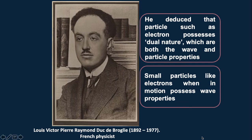This is de Broglie. He deduced that particles such as electrons possess dual nature, which are both the wave and the particle properties. Small particles like electrons when in motion possess wave properties.